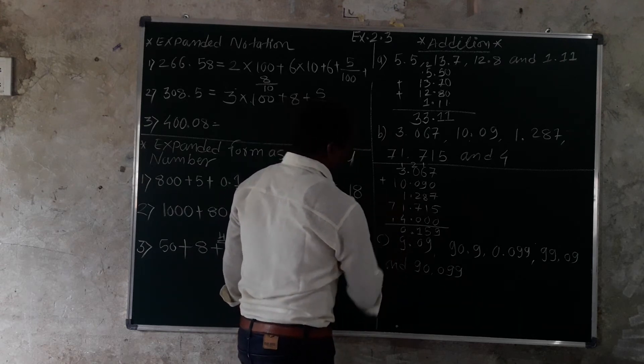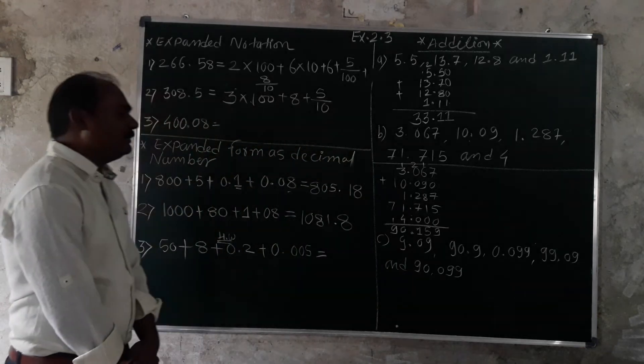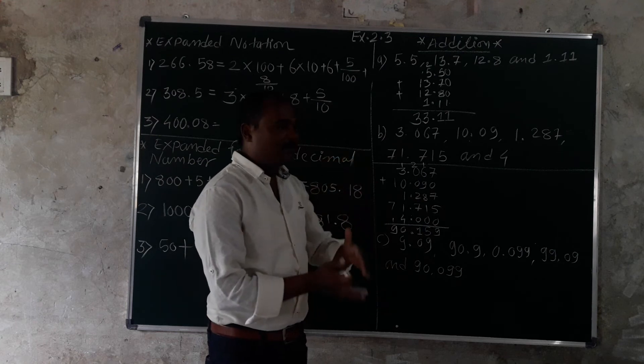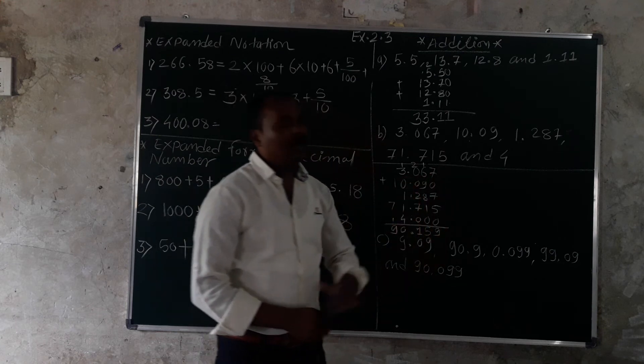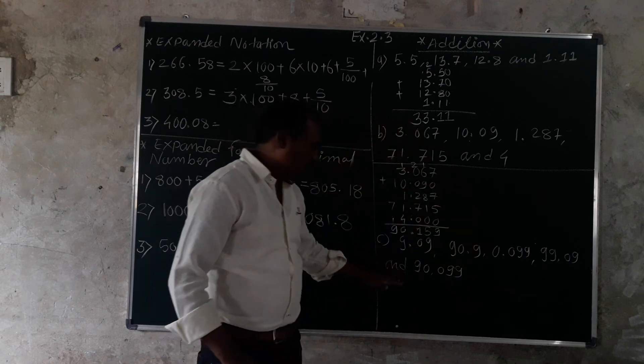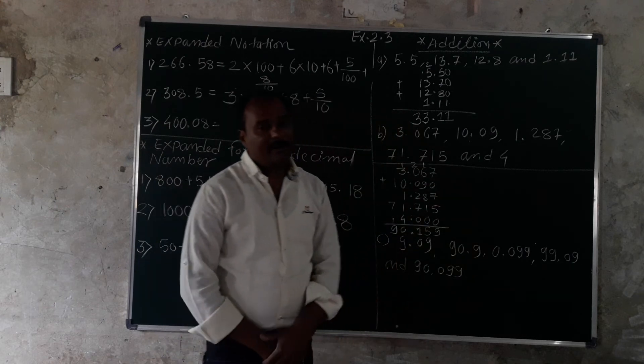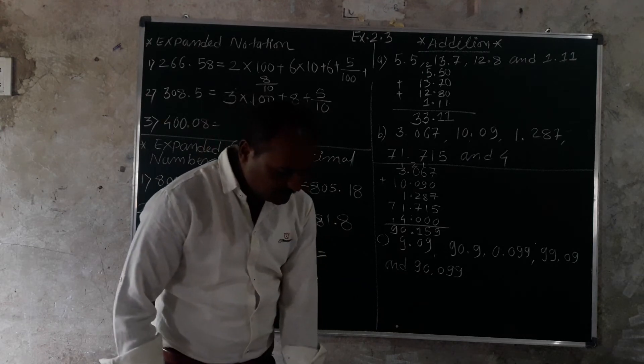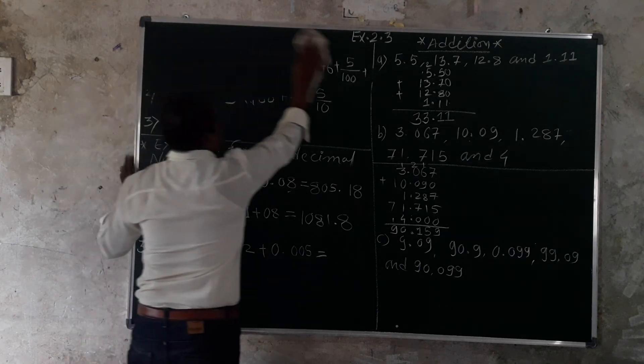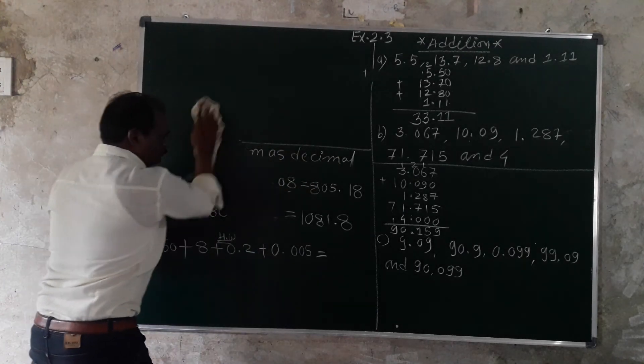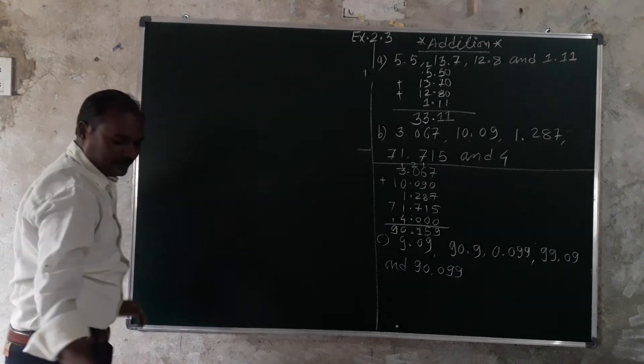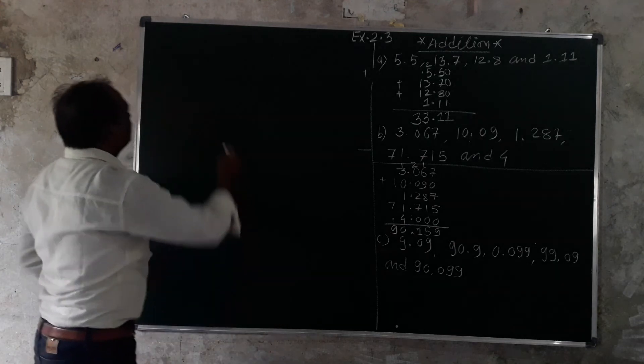1 plus 7 equals 8, plus 1 equals 9. So we get the answer.